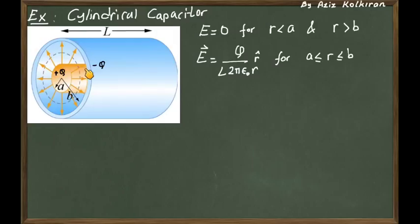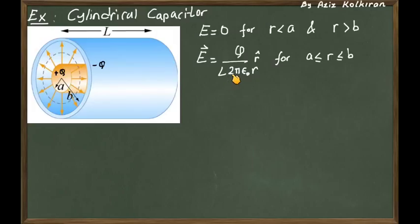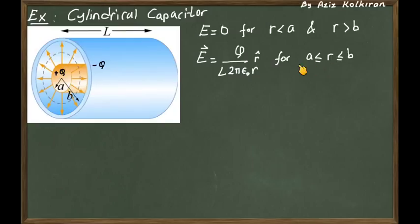What about the electric field between the two conductors? By Gauss's law, we already calculated that the electric field around a linear charge density is equal to λ divided by 2πε₀R, where lambda is the linear charge density — given by the total charge Q divided by the length L. The field is radially outward, and this applies for radii between A and B.